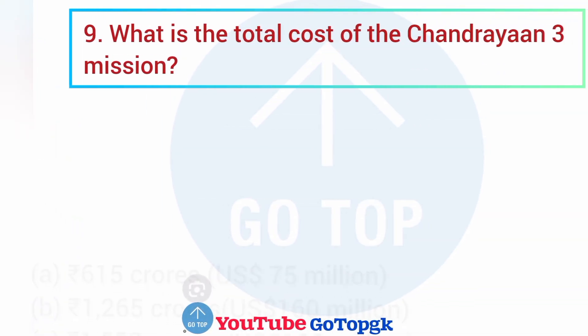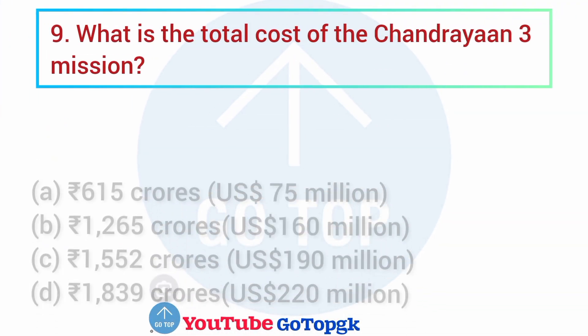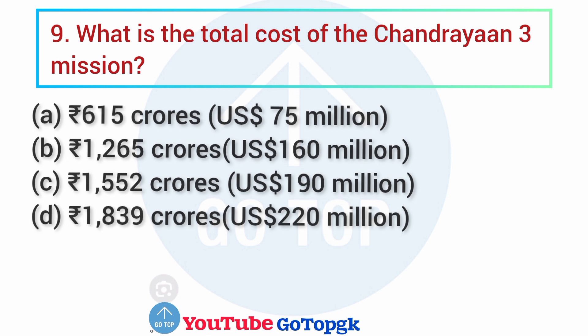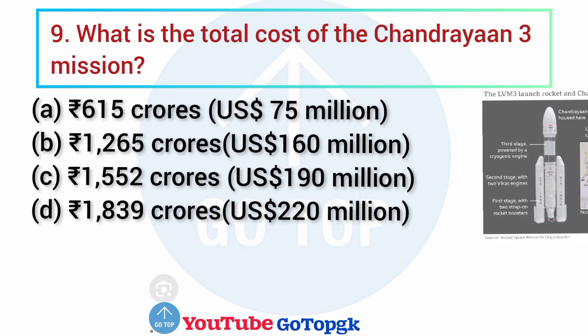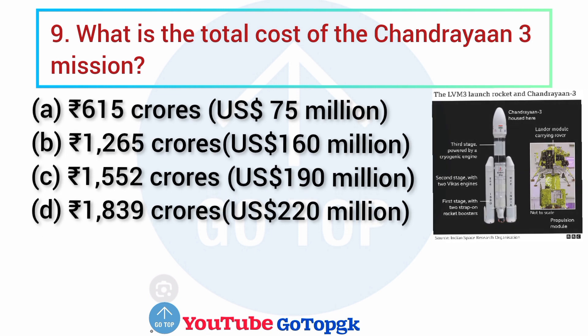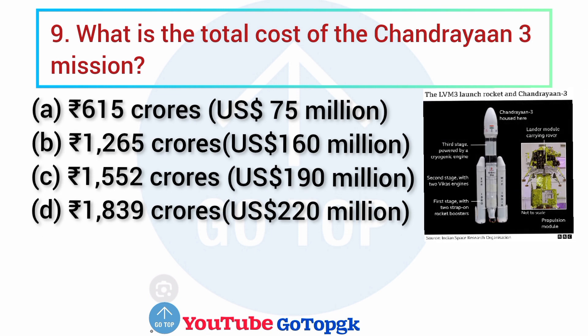Question No. 9. What is the total cost of the Chandrayaan-3 mission? Options: A. Rs. 615 crores (US Dollar 75 million), B. Rs. 1265 crores (US Dollar 160 million), C. Rs. 1552 crores, D. Rs. 1839 crores. Your correct answer is option A: Rs. 615 crores.